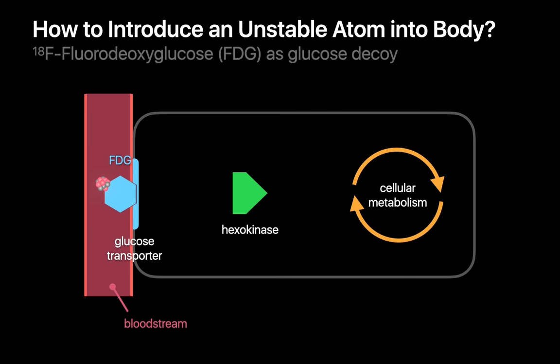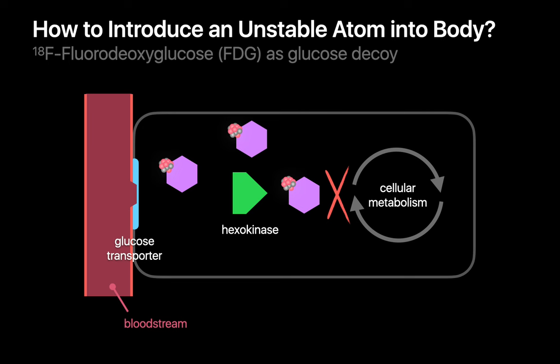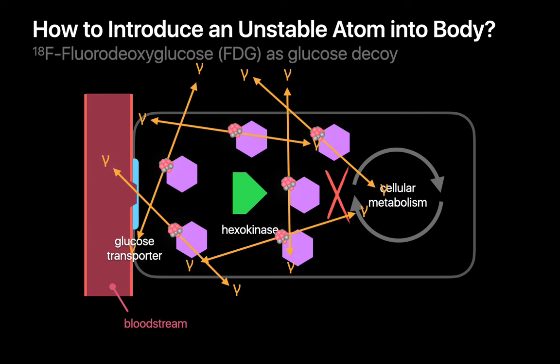Glucose transporters will dutifully move FDG from the bloodstream and into the cell, where hexokinase immediately phosphorylates it into FDG-6-phosphate. However, the replacement of a hydroxyl group by a fluorine atom prevents enzymes involved in glycolysis and other metabolic pathways from recognizing and processing the FDG-6-phosphate molecule. This results in an accumulation of FDG-6-phosphate within the cell, which is particularly pronounced if the cell is hypermetabolic. Since all of those fluorine atoms are unstable fluorine-18 atoms, there'll be gamma-ray photons to detect from the cell, coming from all the positron-electron annihilation events happening inside.